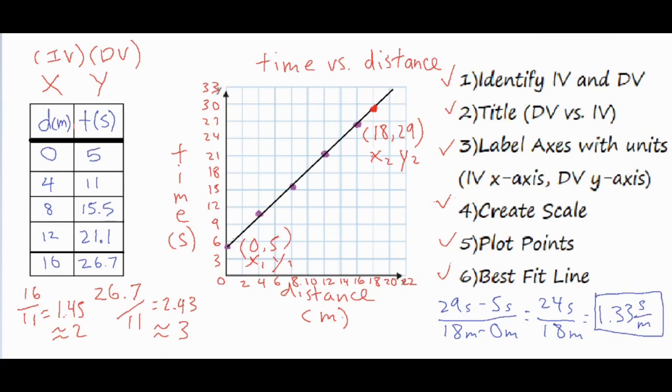So according to my best fit line, my rate of change is 1.33 seconds per meter for the object that's moving. It takes about 1.33 seconds for this object to travel a single meter. So I hope that was helpful in helping you label and draw a graph by hand. Thank you for watching and listening.